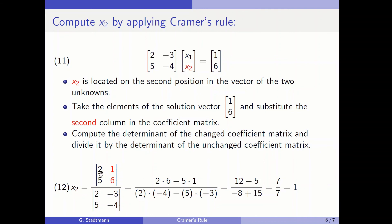So once more: product of the main diagonal is 2 times 6, minus the product of the side diagonal minus 5 times 1. The denominator is the same as before. So we get 12 here and minus 5 here, giving a numerator of 7. So x2 is equal to 7 over 7, meaning x2 equals 1.